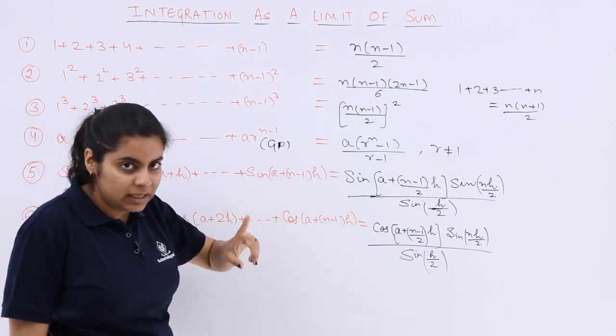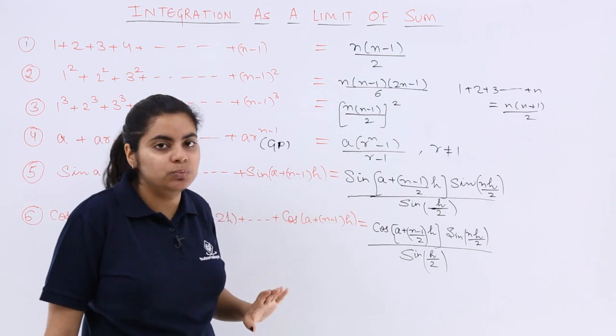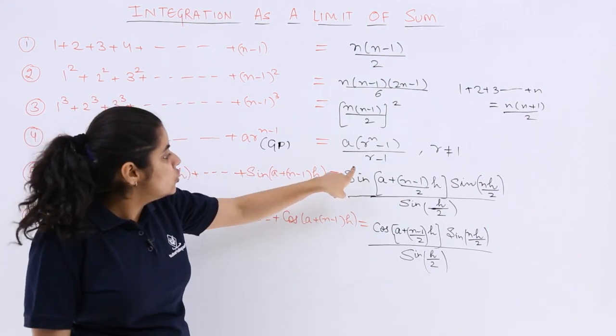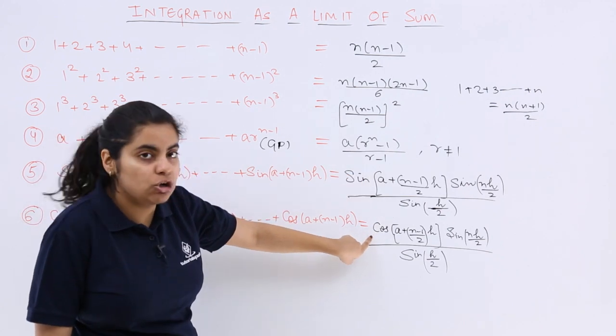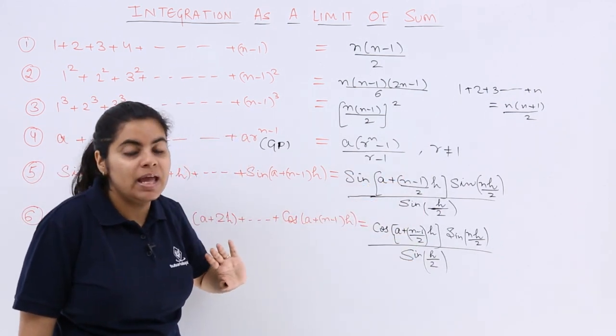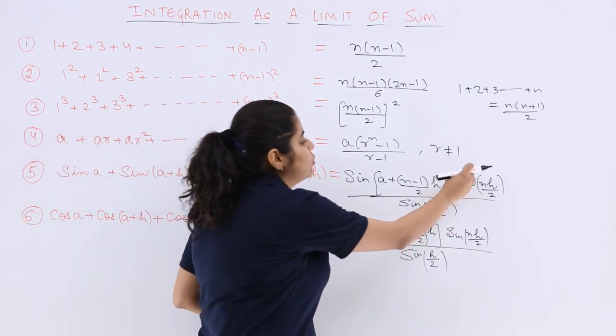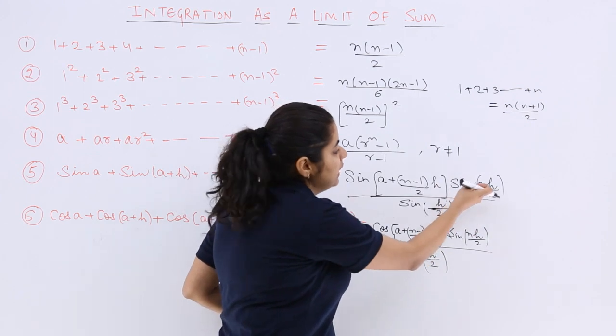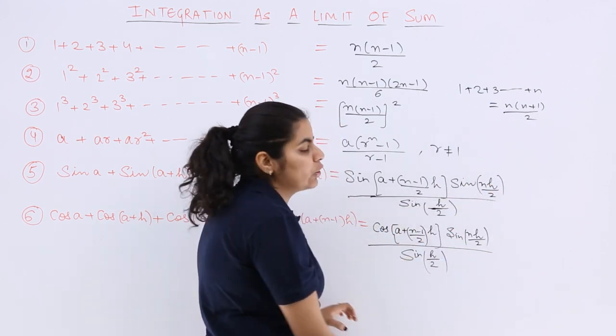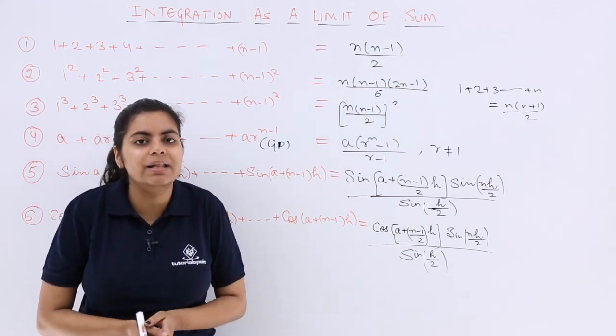See, when it is the formula of sin, sin a plus n minus 1 into h by 2. That has to be done. When it is the formula of cos, just replace sin by cos. cos a plus n minus 1 into h by 2. And whatever the formula may be for sin or cos, these 2 terms are going to be the common. Sin n h by 2, here also sin n h by 2. Sin h by 2, here also sin h by 2. The proof and all is not under the scope of class 12.